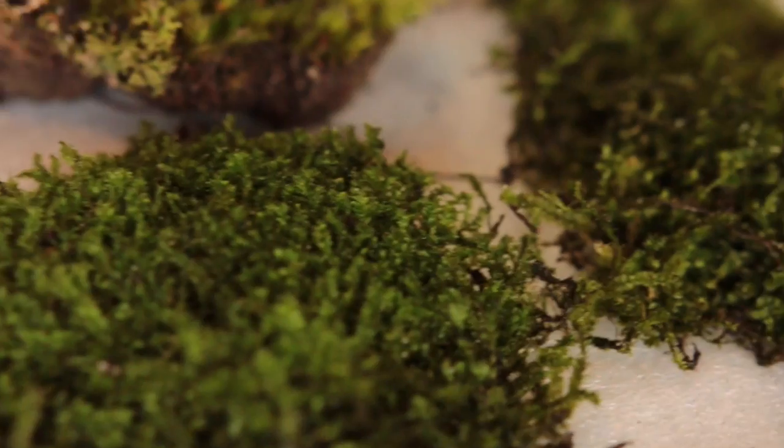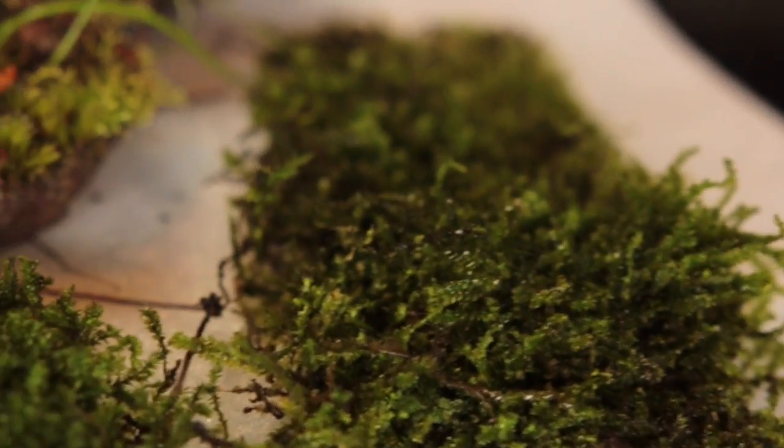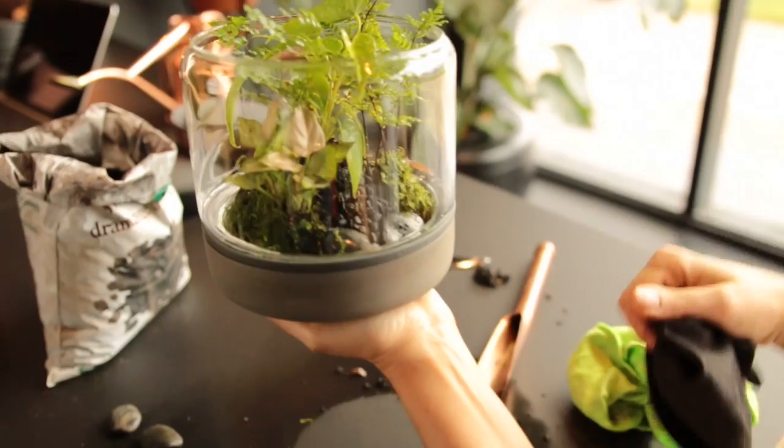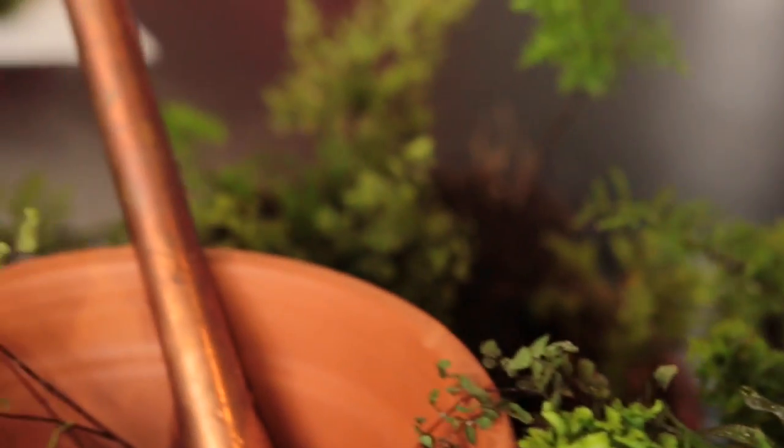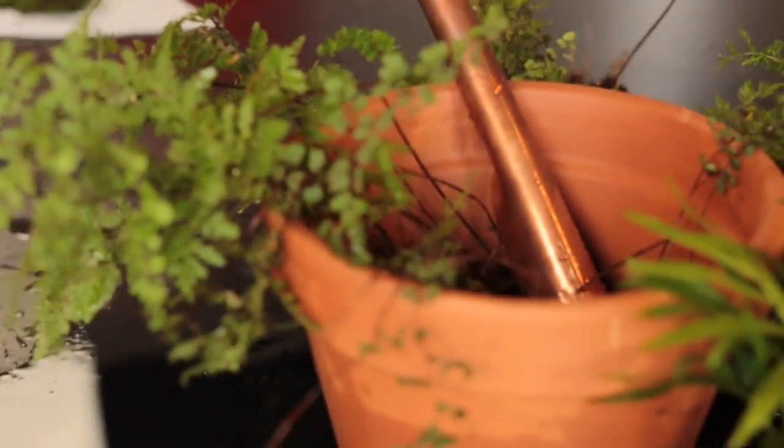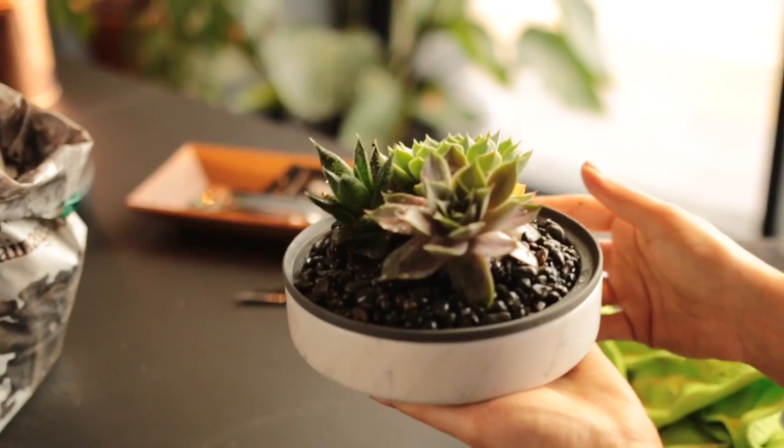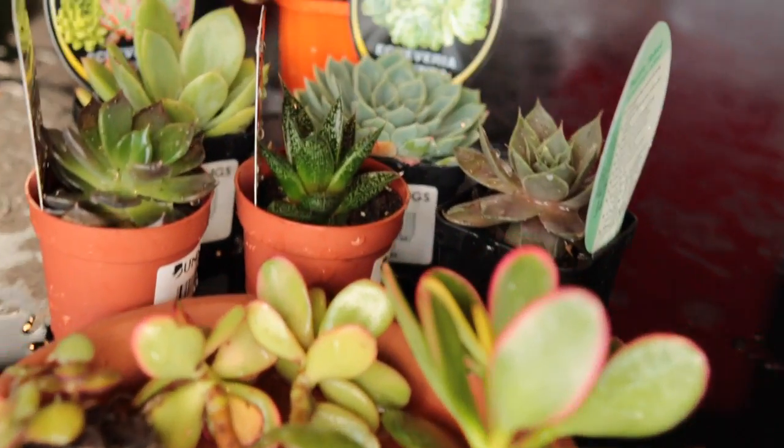Rainforest, a closed system for moisture-loving plants and mosses. Temperate, an open design for small terrarium plants. And arid, for plants that enjoy less humidity and more sunlight.